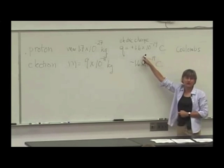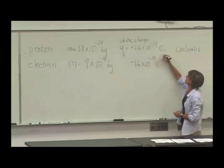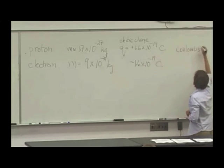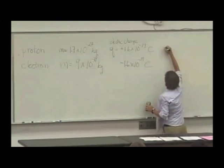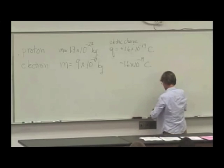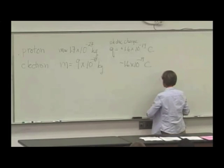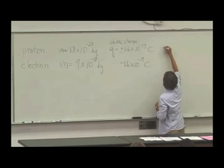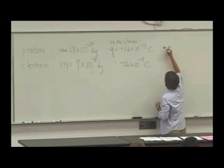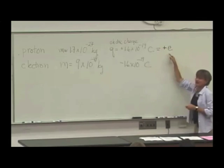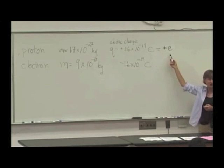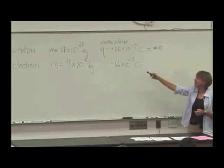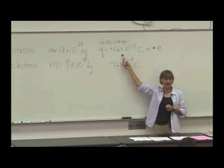And they always occur in combinations that give us one of these charges or zero. This number comes up so often that we have defined a constant to represent it. And this constant is called plus little e. Let's see if I can find a marker that actually writes plus e.